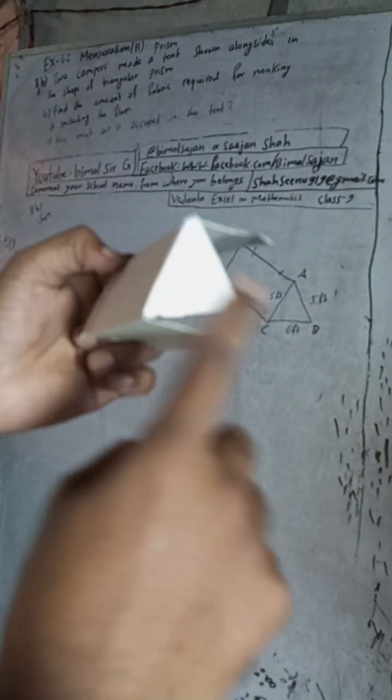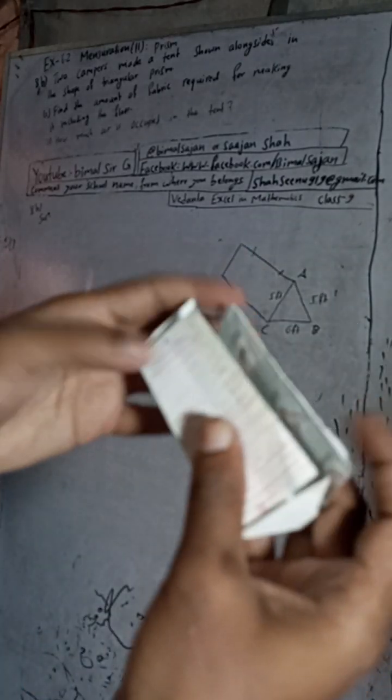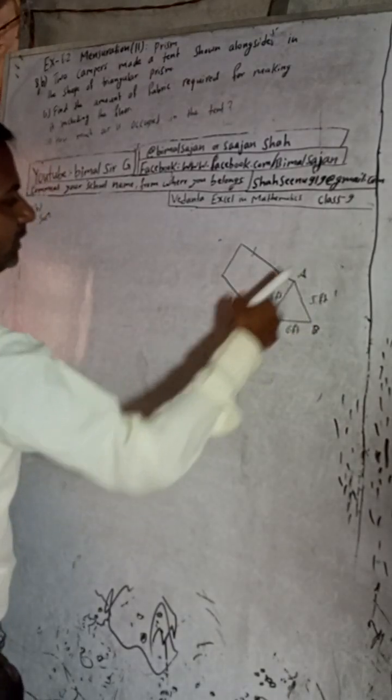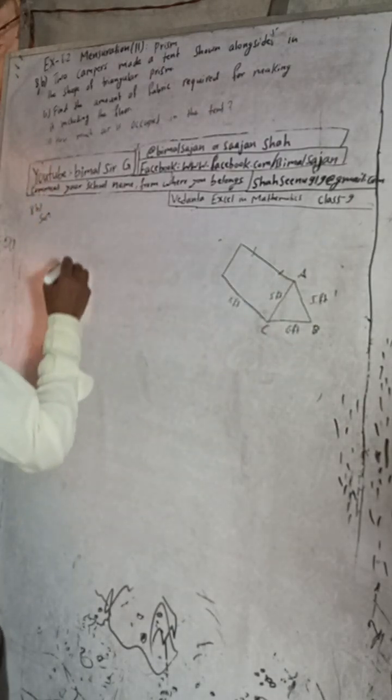To find the amount of fabric required for making the tent, we need to find the total surface area. Fabric means cloth — this much cloth plus this much cloth, covering all surfaces. So we have to first find the lateral surface area. The lateral surface area involves the triangular base of the prism.